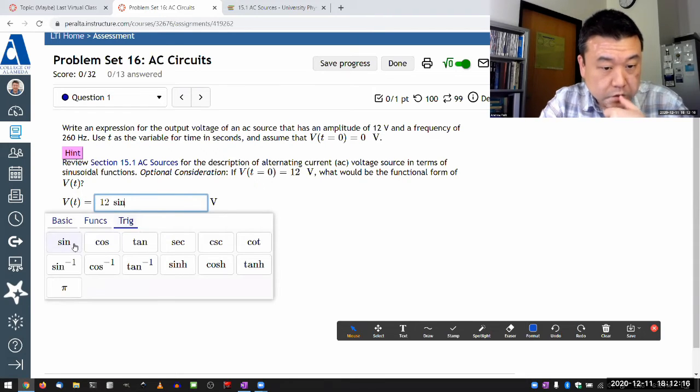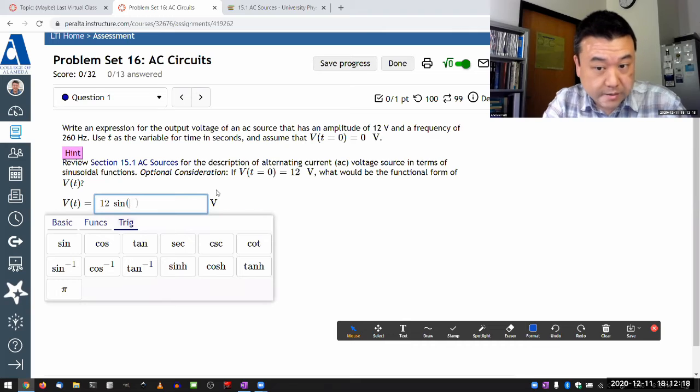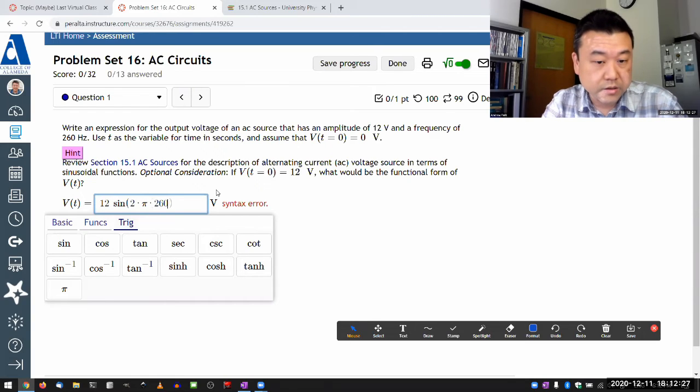So what it should accept as a correct answer is 12 sine of 2 pi times the frequency 260 hertz times t, t for time in seconds.